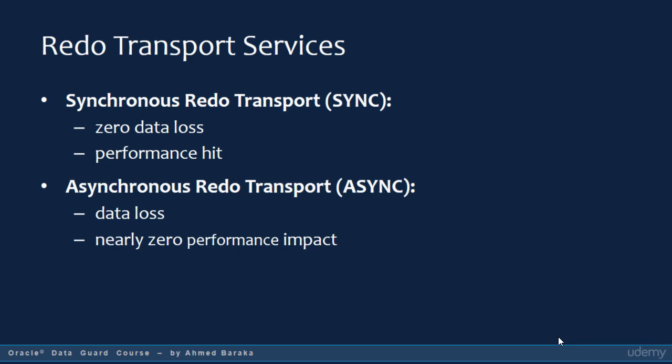When you use asynchronous redo transport, the primary database doesn't wait for the standby database to receive and save the block — it commits the transaction straight away. This results in nearly zero performance impact from the Data Guard architecture. The disadvantage is potential data loss: you would lose some data if a failure happens to the primary database. Which one to use depends on your business and the criticality of your application. If data loss is not acceptable, you must use synchronous transport. If some data loss is tolerable, study the amount of potential data loss and plan accordingly — this decision is made during the planning stage when configuring Data Guard.